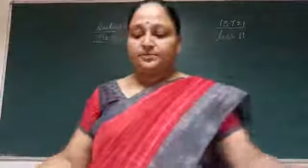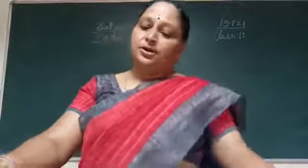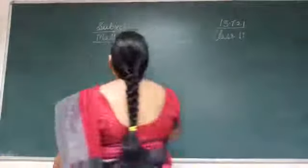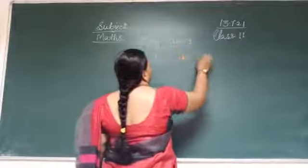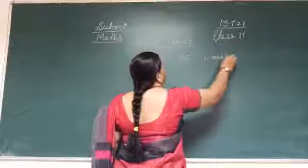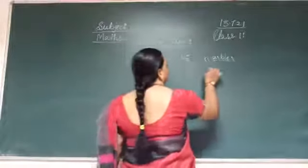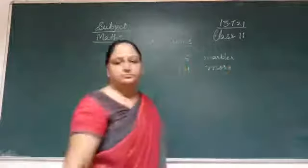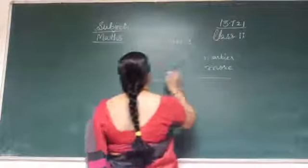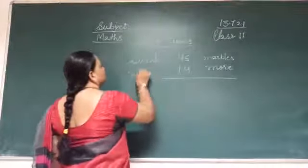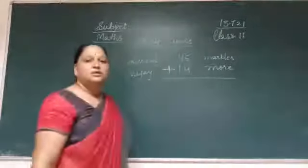Story number 6 page number 13. Sunil has 45 marbles. Vijaya has 14 more. How many marbles has Vijaya? So, we have to find out how many marbles does Vijaya have. So, what we will do? We will add the numbers.